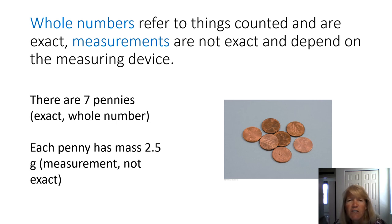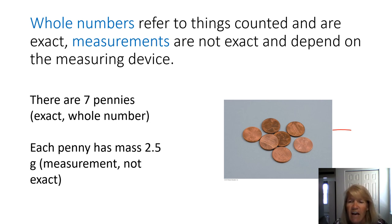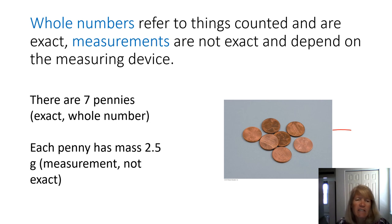Whole numbers are also different from measurements — whole numbers are things that we count. For example, here we have seven pennies, and there's exactly seven pennies. It's not maybe 7.01 pennies, it's exactly seven. But if you're talking about the mass of these pennies — if each has a mass of 2.5 grams — well it might really be 2.507, and how you report that depends on how well you measured it. That's the difference between a whole number and a measurement.